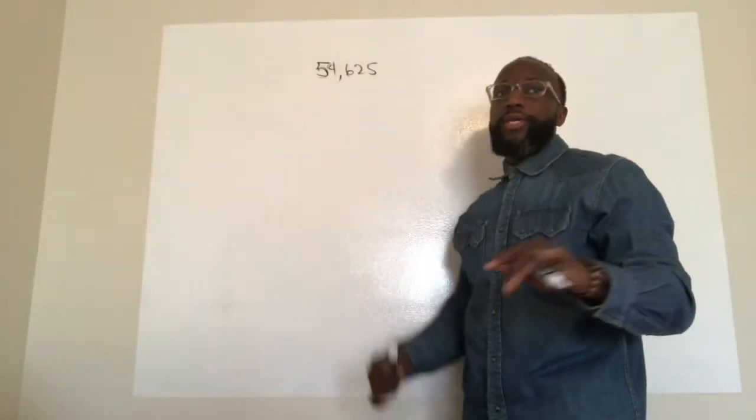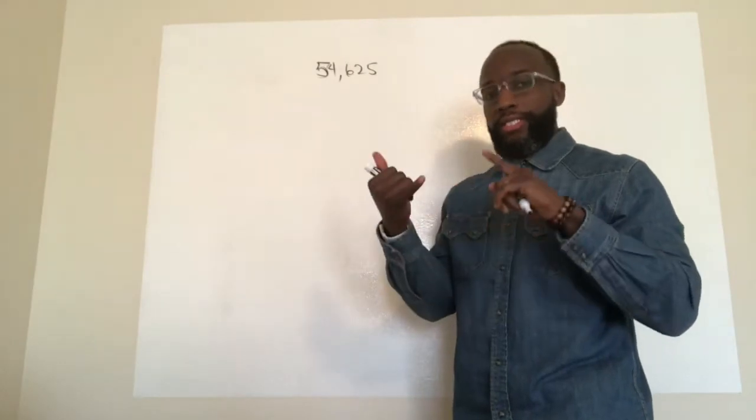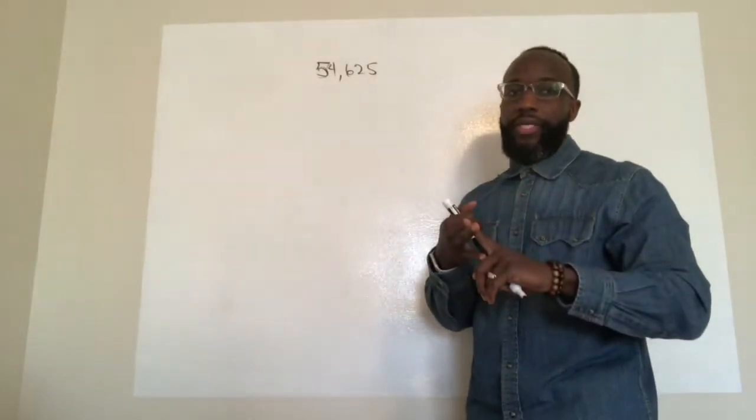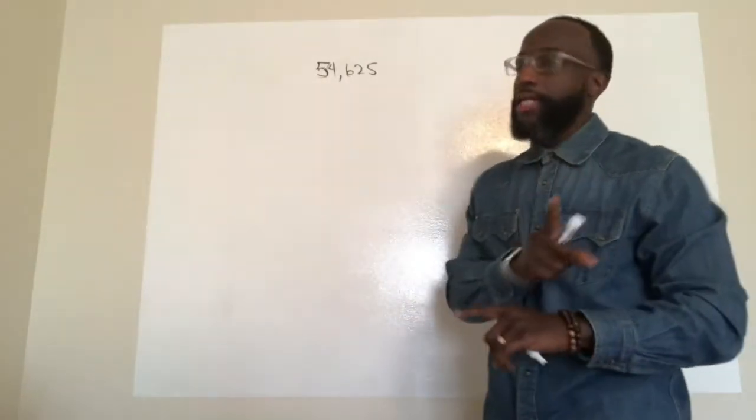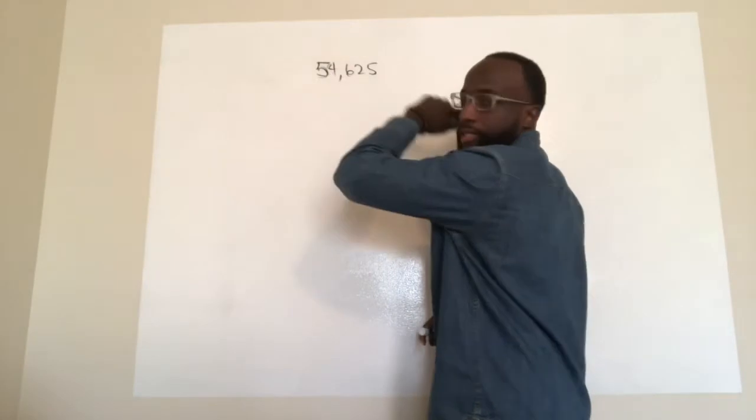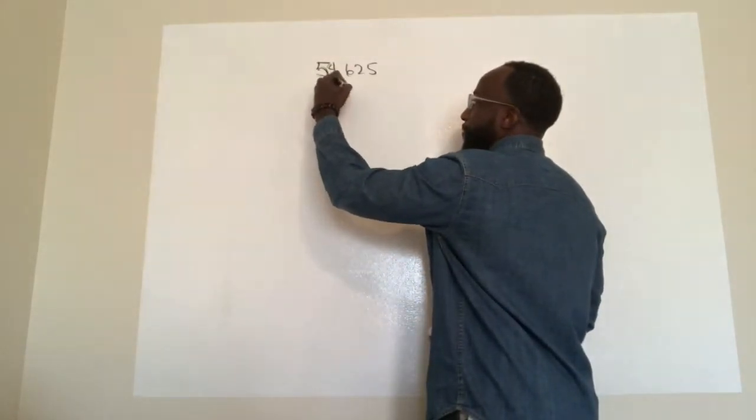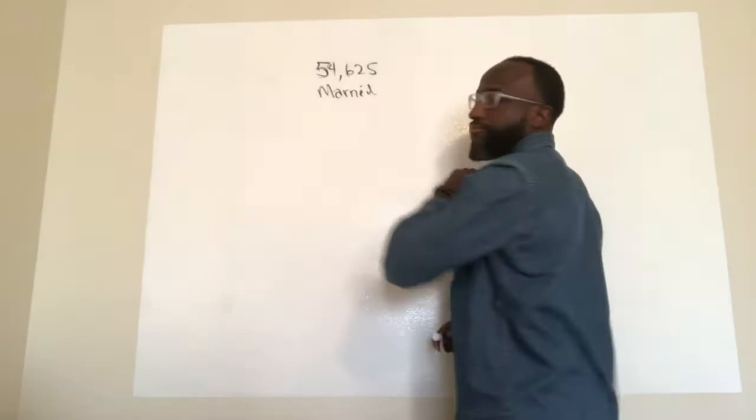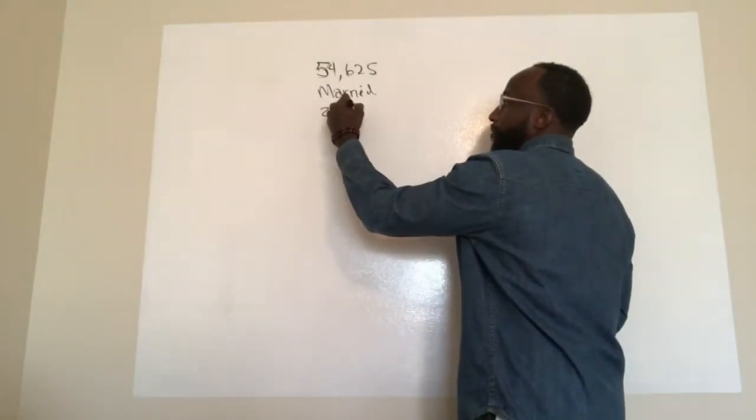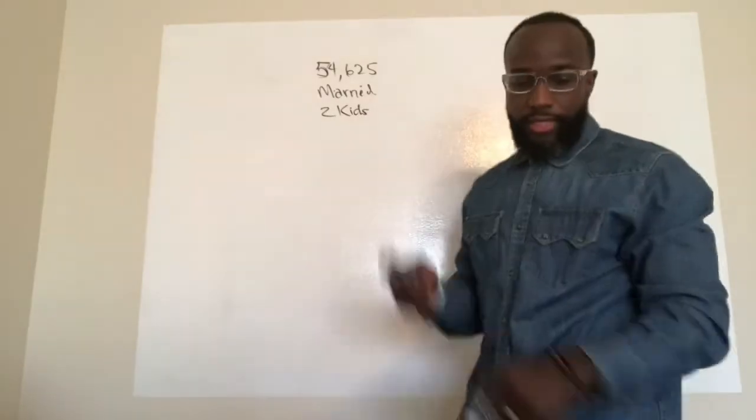In state taxes, you get a deduction based on, there's a deduction for your marital status, there's a deduction for your number of dependents. These are all examples, these are not technical terms. So gross income $54,625, married, and there is two kids. There's two kids involved.